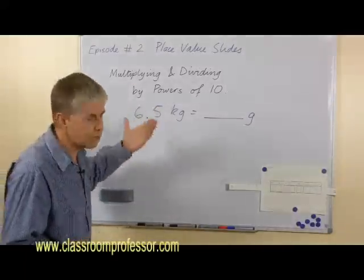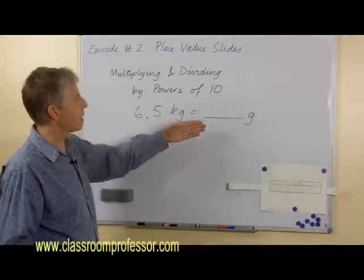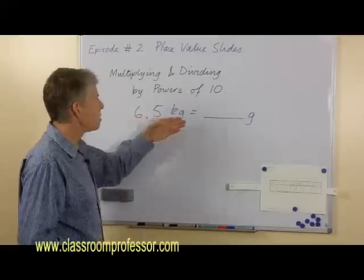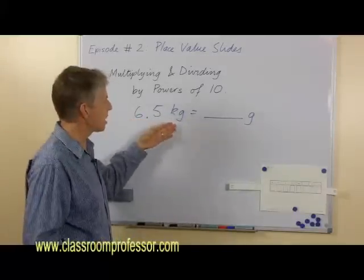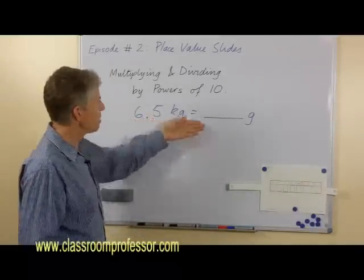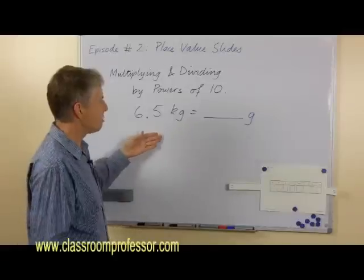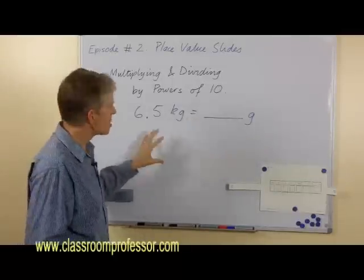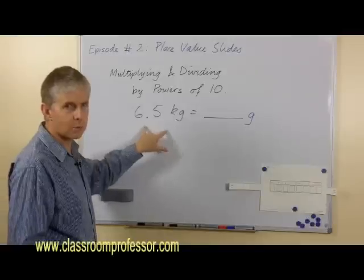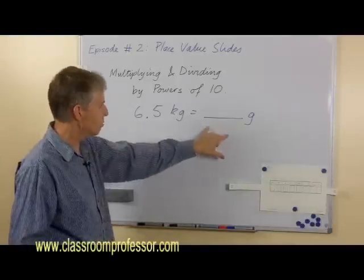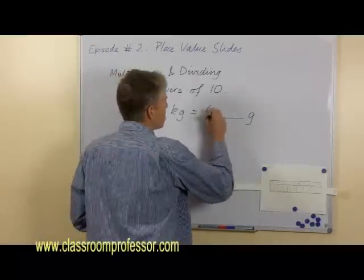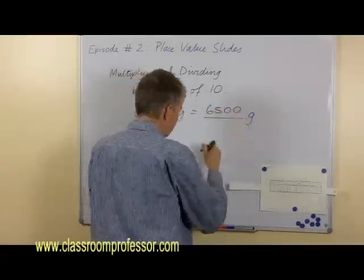In this example, 6.5 kilograms would be how many grams? Students need to know that a kilogram is 1,000 grams, so to convert this way we need to multiply by 1,000. What happens when we multiply 6.5, or 6 and 5 tenths, by 1,000? The answer is 6,500.